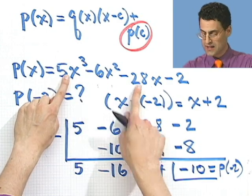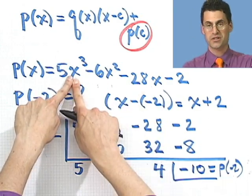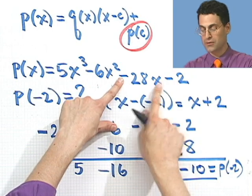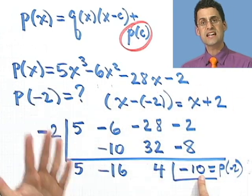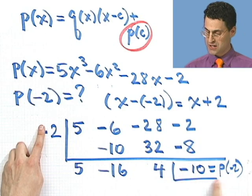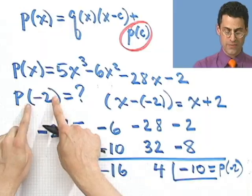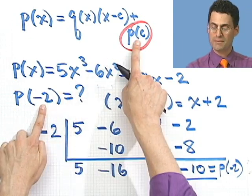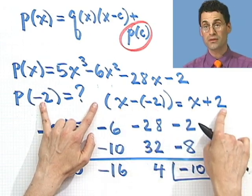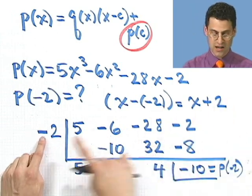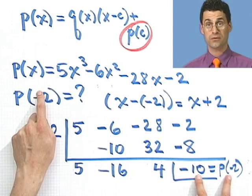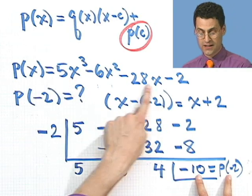That is to say, if you actually evaluate this thing at negative 2: negative 2 cubed is negative 8, times 5 is negative 40, then subtract 6 times 4, minus 28 times negative 2, minus 2 — all that should equal negative 10. And you can see it's actually easier to do the synthetic division. The secret was to go from evaluating a polynomial to thinking about it as a remainder — divide by x minus that number, which became x plus 2, switch the sign, do a synthetic division carefully, and the remainder turns out to be the value of the function at negative 2.